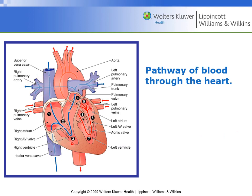Blood enters from the systemic circulation via the superior and inferior vena cava into the right atrium. From the right atrium it flows through the valves out into the pulmonary circuit to get oxygenation. It is returned via the right and left pulmonary veins, enters the left atrium, goes to the left ventricle, and then exits via the aorta.